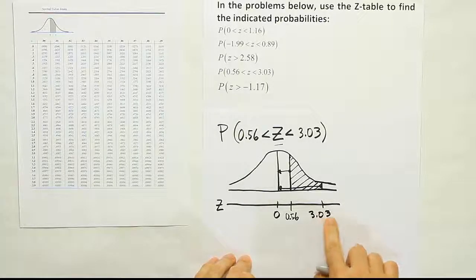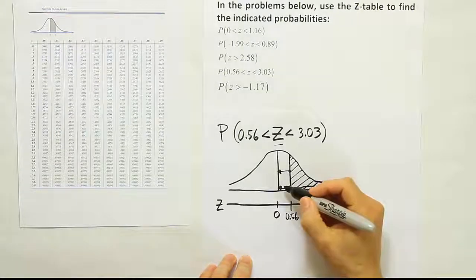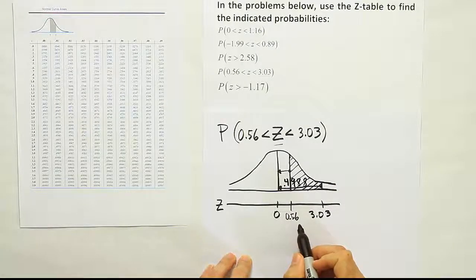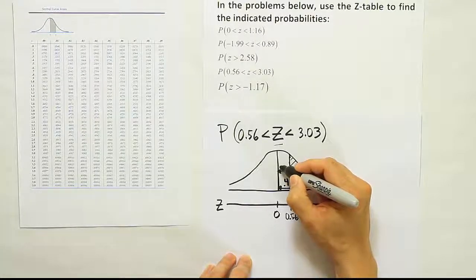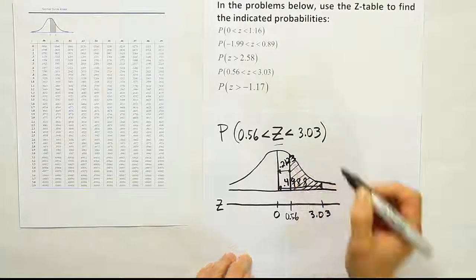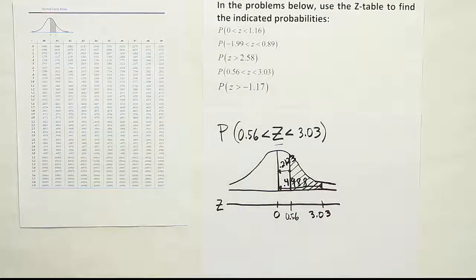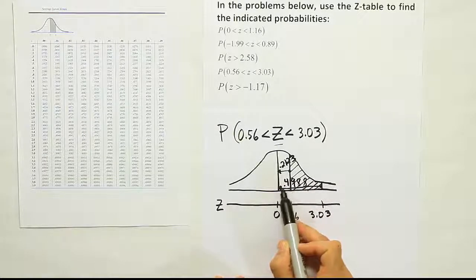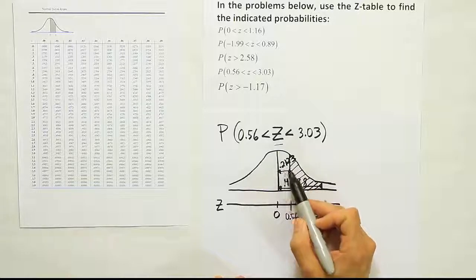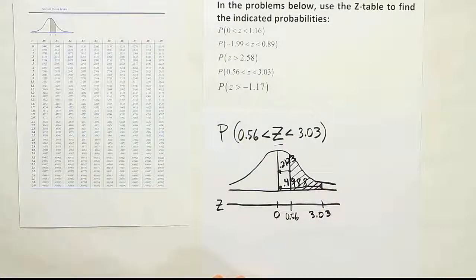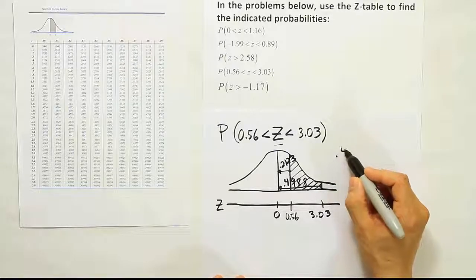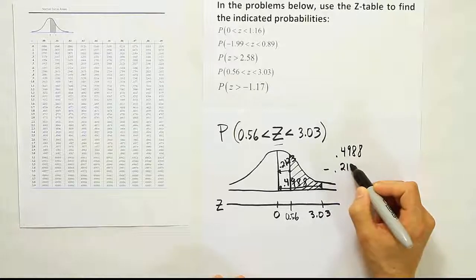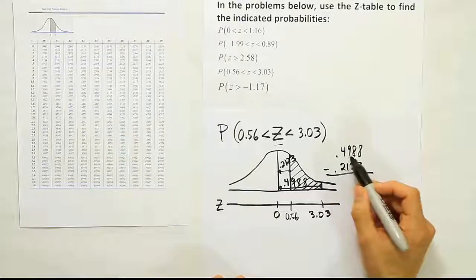Okay, so when we looked up 3.03, we found the value 0.4988. And when we looked up 0.56, we got the value 0.2123. I've tried my best to write them in the locations where they belong. And the reason why I did that is so that I can clearly see that this is actually spilling over into the white space. And I tried to write this one inside the white space so that you would see that it's just that little part there. So then what's indicated by the drawing is that we need to subtract these two numbers in order to get our final answer.